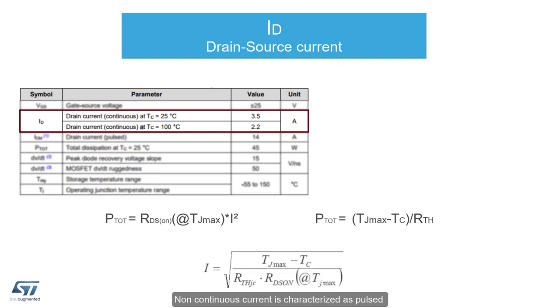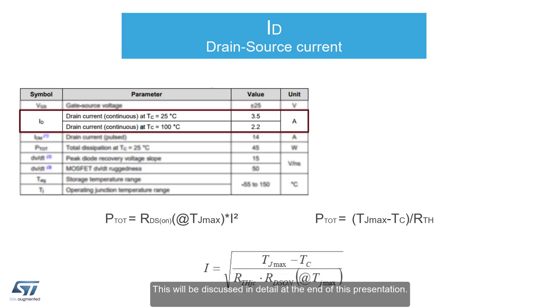Non-continuous current is characterized as pulsed and is derived from the safe operating area, or SOA, of the device. This will be discussed in detail at the end of this presentation.